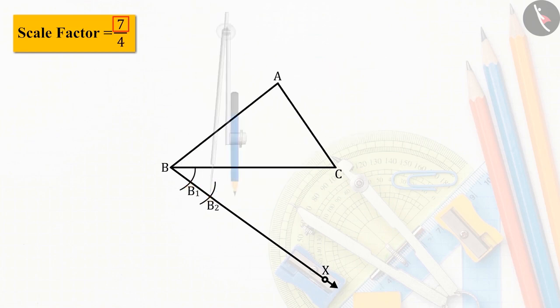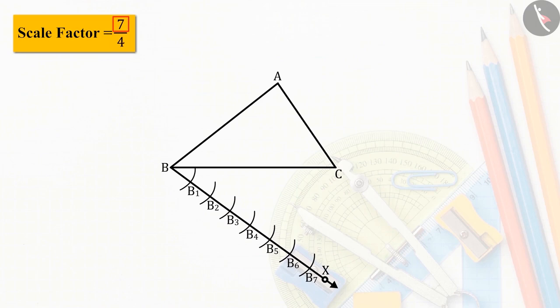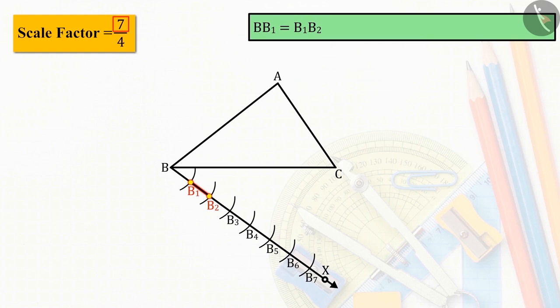B1, B2, B3, B4, B5, B6 and B7 are drawn in such a way, so that BB1 equals B1B2, equals B2B3, equals B3B4, equals B4B5, equals B5B6, equals B6B7.